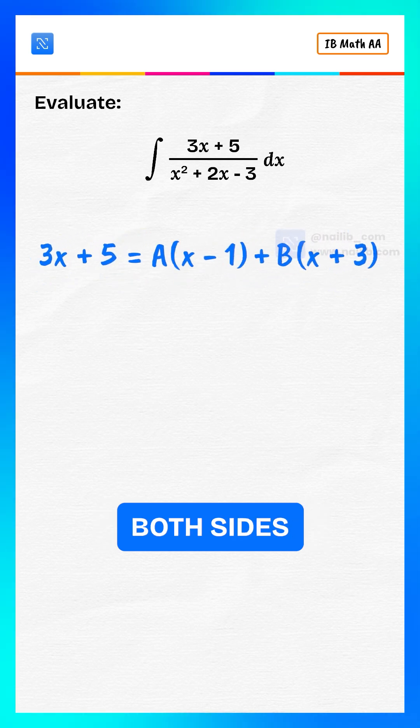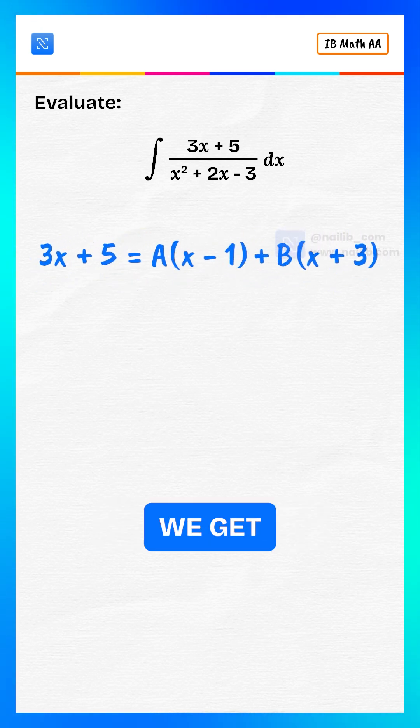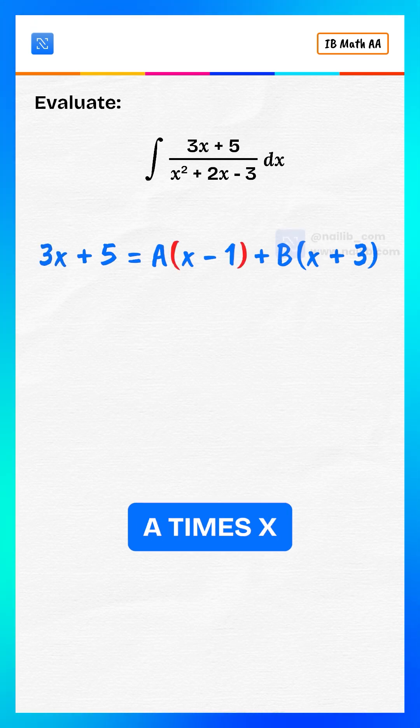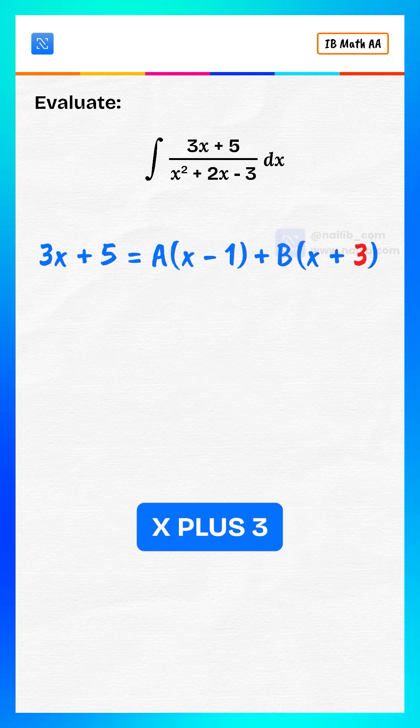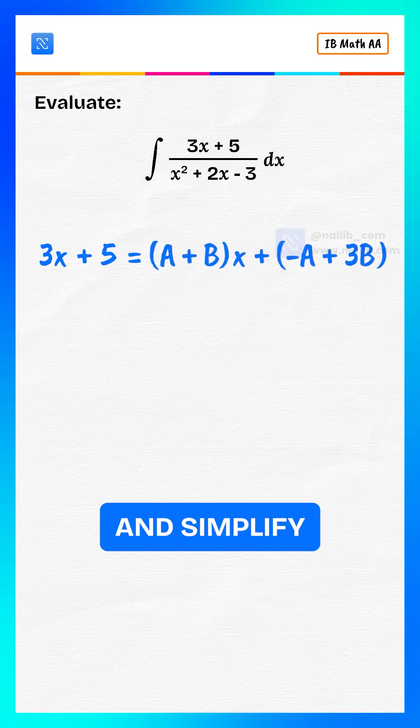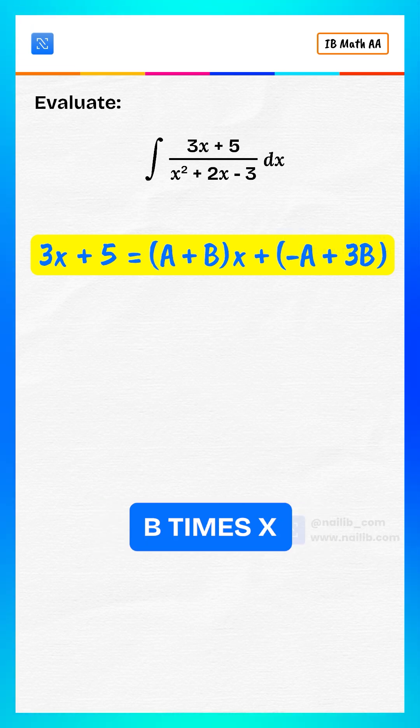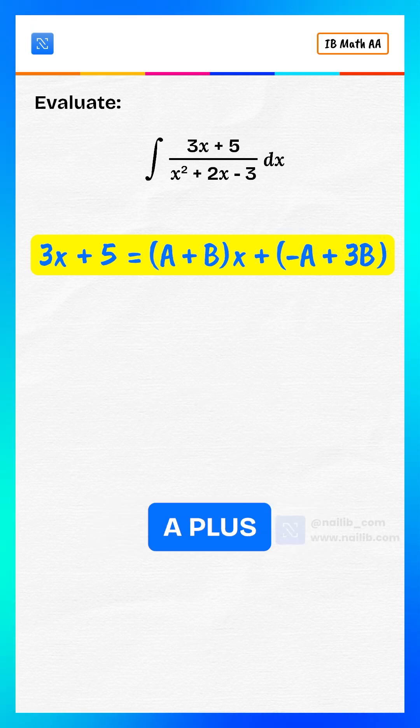Now multiply both sides by the denominator. We get 3x plus 5 equals a times x minus 1 plus b times x plus 3. Now expand and simplify. 3x plus 5 equals a plus b times x plus negative a plus 3b.